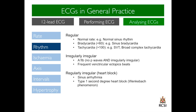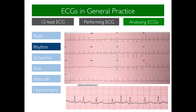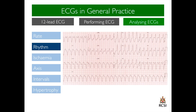Moving on to rhythm. The rhythm can either be regular, irregularly irregular, or regularly irregular. As an example, this 12-lead ECG and its rhythm strip below show an irregularly irregular rhythm and no P waves — this is atrial fibrillation. This next 12-lead ECG shows a broad complex tachycardia; in this case, ventricular tachycardia.